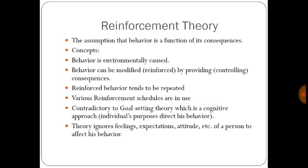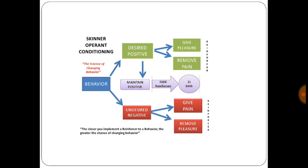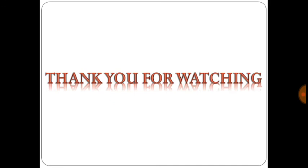The last theory is reinforcement theory. The assumption is that behavior is a function of its consequences — this is Skinner's operant conditioning. Whenever a behavior is performed, if we want to change the behavior, whether desired (positive) or undesired (negative), we apply punishment or reinforcement. Thank you for watching.